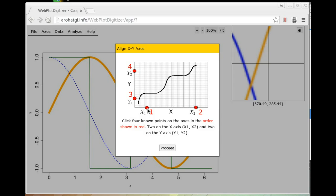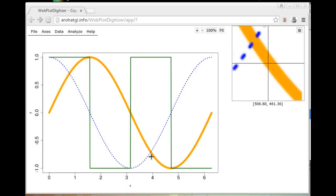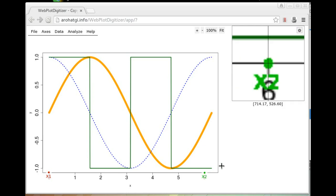In the next step, we have to select four points, two on the X axis and two on the Y axis. This is required by the software to align the pixels of the image to the actual X and Y values on the plot. Click proceed. You can pick any two points on the X or the Y axis, but generally you want to select the points that are furthest apart for maximum accuracy.